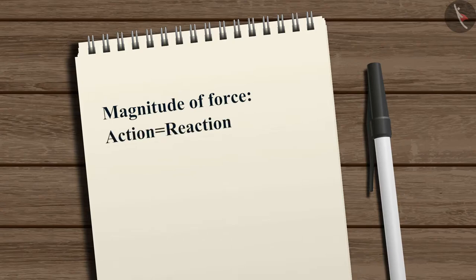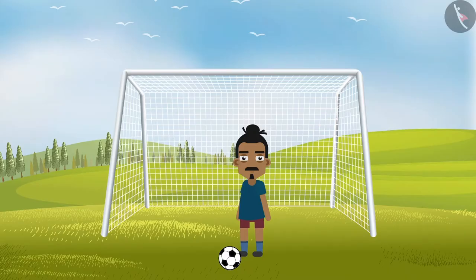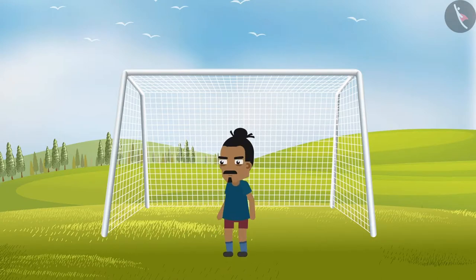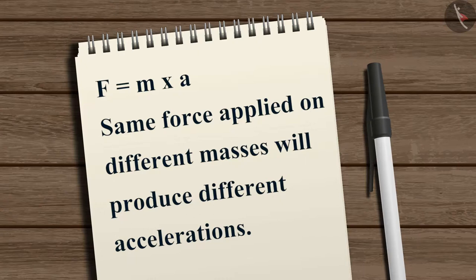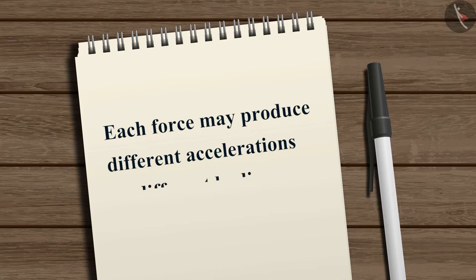You must note that even though the action and reaction forces are always equal in magnitude, they may not always produce accelerations of equal magnitudes. This is because each force acts on a different body that has a different mass. According to F = M × A, the same force applied on different masses will produce different accelerations. Thus, each force may produce different accelerations on different bodies.